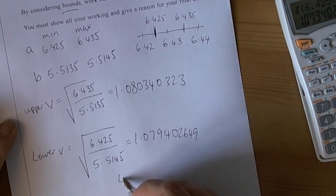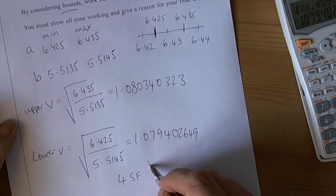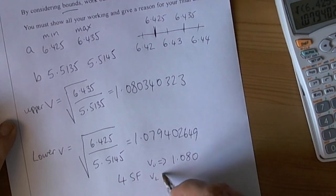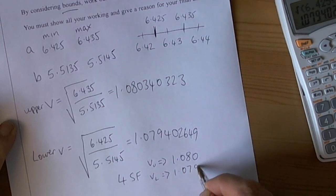So for example, if I write both of these numbers down to four significant figures, then the upper V will become 1.080, the lower V will become 1.079. Not quite the same yet.